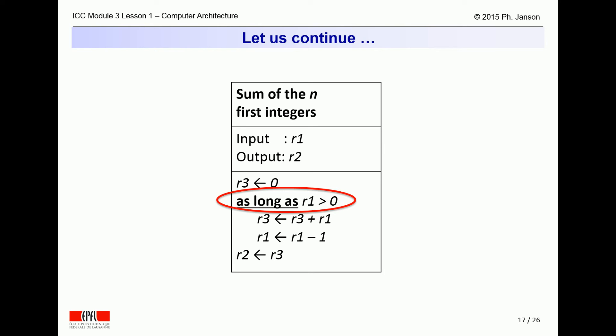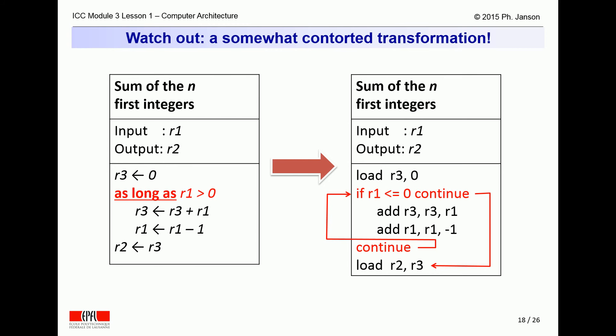However, we still do not have a formalism to tell a computer that it needs to react to certain logical tests. On the way to enriching our language to express such condition testing, we first need to rewrite our algorithm in a somewhat contorted way. In effect, our condition testing means that if the condition is not met, the computer should skip straight to the final load instruction. Otherwise, it should execute the two arithmetic additions and then retest the condition as long as it holds.